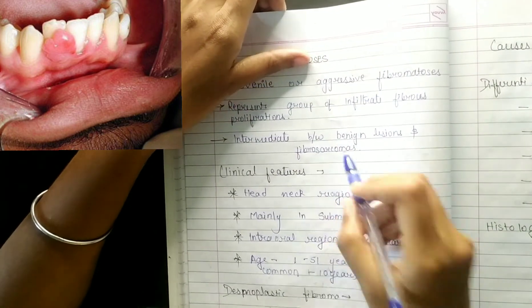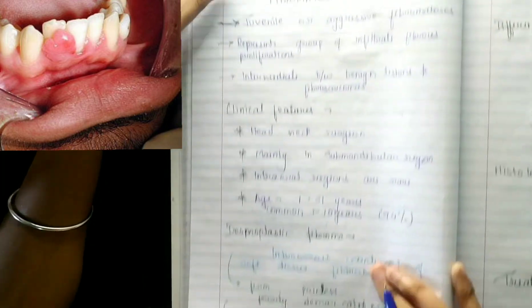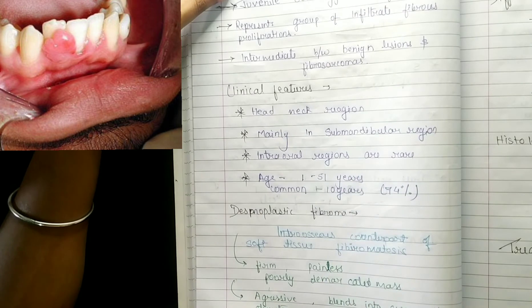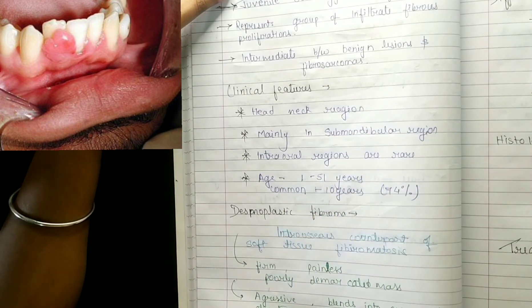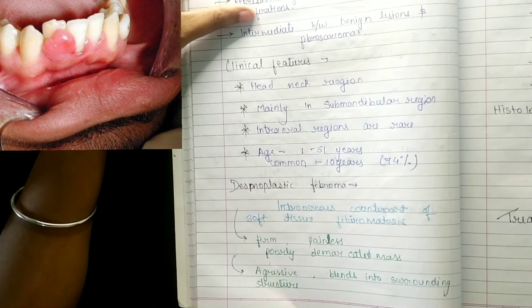Fibromatosis in clinical features: head and neck region is mainly submandibular lesion. Intraoral lesion is rare. Age 1 to 51 years.